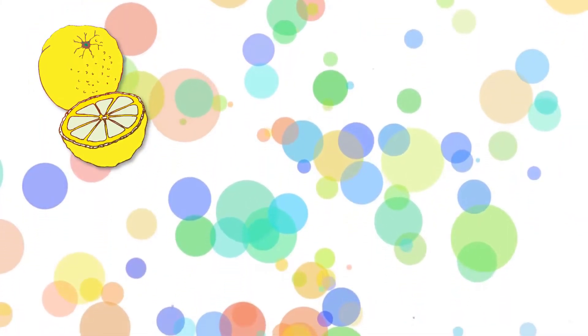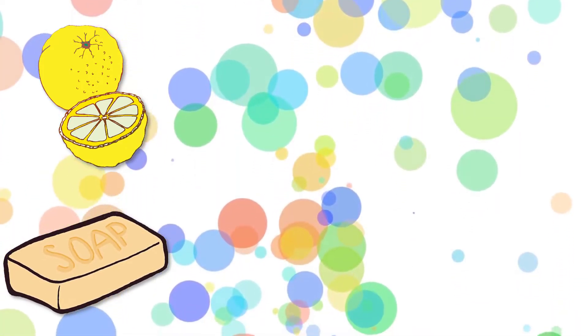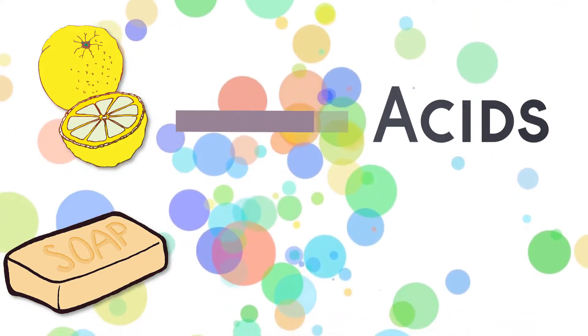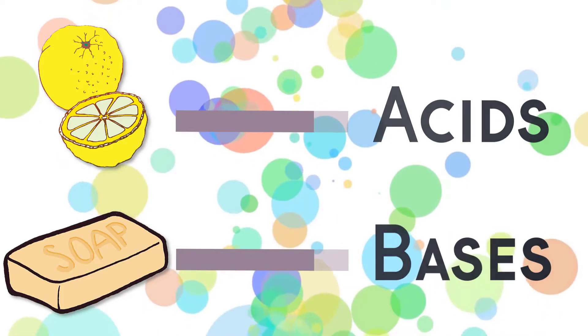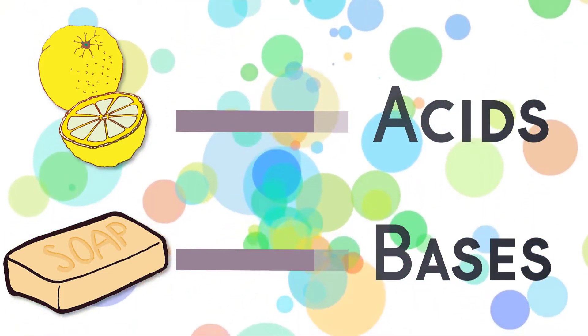Lemons have molecules that are sour. Soap has molecules that are slippery. Sour molecules are often acids. Slippery molecules are often bases. Acids and bases are two different types of molecules.